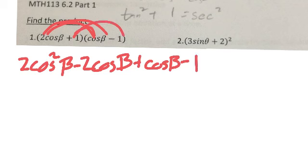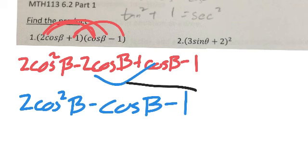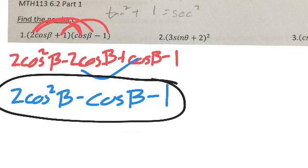Next, we want to combine any like terms that we have. So we've got negative 2 cosine beta and a positive cosine beta. So this is going to be 2 cosine squared beta minus cosine of beta minus 1. And that's it. We're not really worried about rewriting it yet. We're just making sure we know how to distribute.